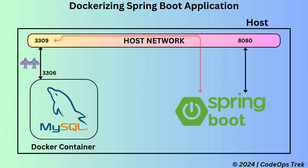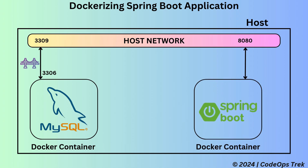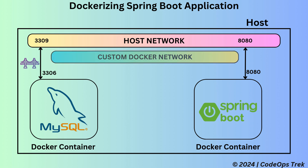Now, let's see what happens when we dockerize the application. Once the application is dockerized, it will run inside its own Docker container, just like the MySQL database. In this case, the Docker container becomes the host for the application. When the application tries to connect to the database using localhost, it will assume the database is running in the same container. However, since the database is actually running in a separate container, the connection will fail. To solve this, Docker provides a solution: creating a custom Docker network. We will attach both the database and application containers to this custom network. Instead of using localhost, the application will now connect to the database using the database container name.